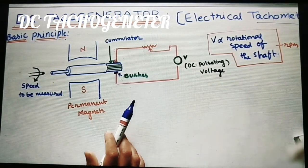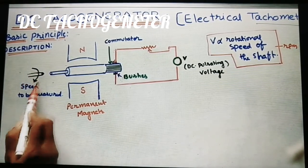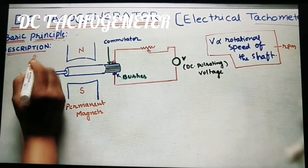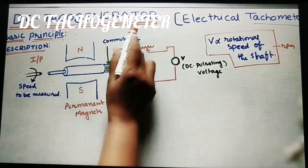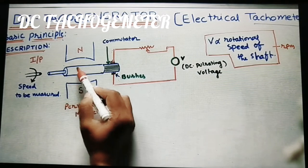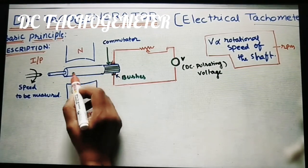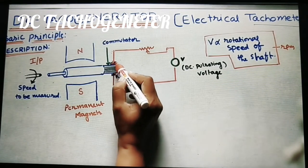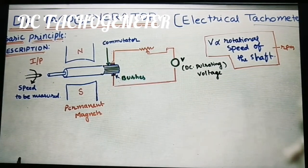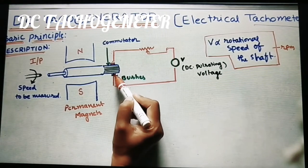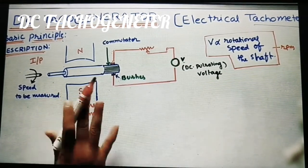Now let us look at the description of this tacho generator. The input shaft is the machine shaft or engine shaft whose speed is to be measured, and it is connected to the tacho generator. The main parts inside are: the conductor — an electrical winding — and two permanent magnets, North Pole and South Pole. Whatever electricity is generated is collected by brushes, which are brush-type contacts touching the commutator. The generated voltage is then read on a voltmeter connected to the output.